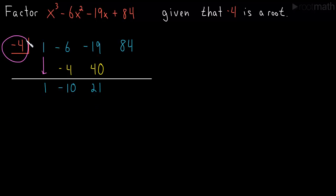And then minus 4 times positive 21 is minus 84. So we put a minus 84 here, we add down the column and we get 0, which is great because that means we have no remainder.